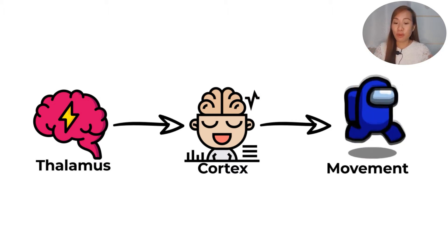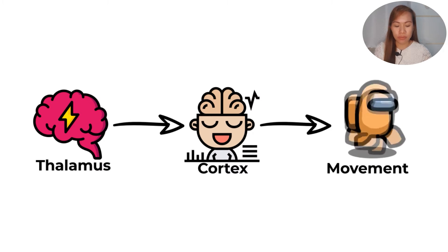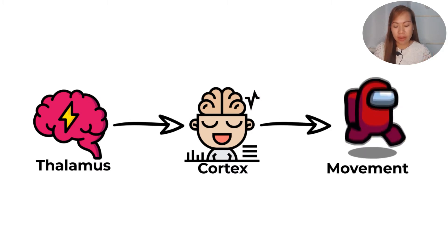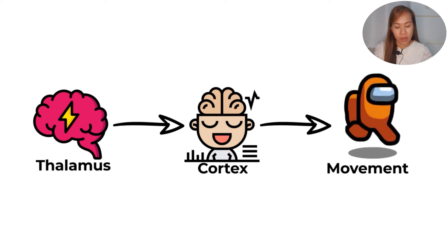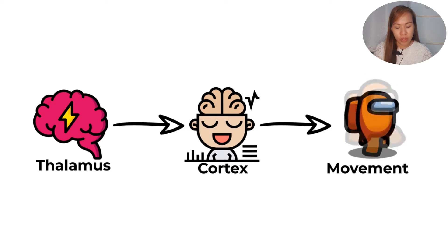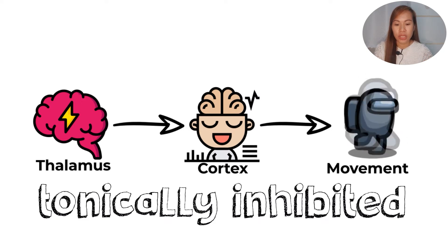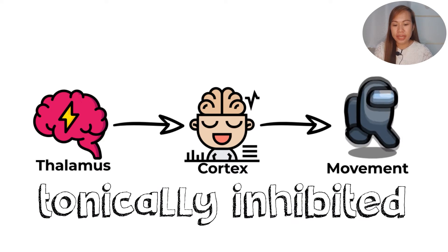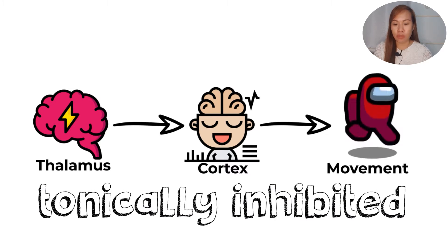Do we want that to happen? Of course not. You will be very, very tired if you are constantly moving. So this is the function of the basal ganglia — the thalamus needs to be inhibited in order for us not to constantly be in motion.